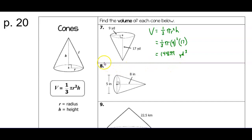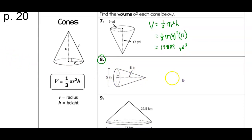For number eight, split the diameter of 5 in half to get the radius before starting. You have the cone's height, and you can calculate the volume. The answer should come out to 52.36.